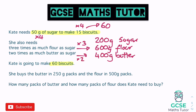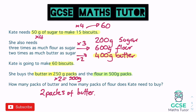Butter is sold in 250 gram packs and we need 400 grams. One pack (250g) isn't enough, so we need at least two packs: 2 × 250 = 500 grams. That's over 400g, so two packs of butter is sufficient.